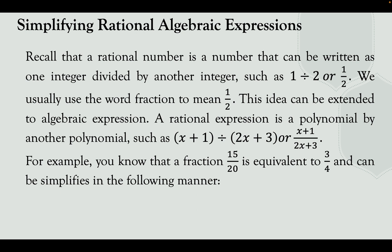We need to recall that a rational number is a number that can be written as one integer divided by another integer, such as 1 divided by 2, or one half. This idea can be extended to algebraic expressions. A rational expression is a polynomial divided by another polynomial, such as x plus 1 divided by 2x plus 3.